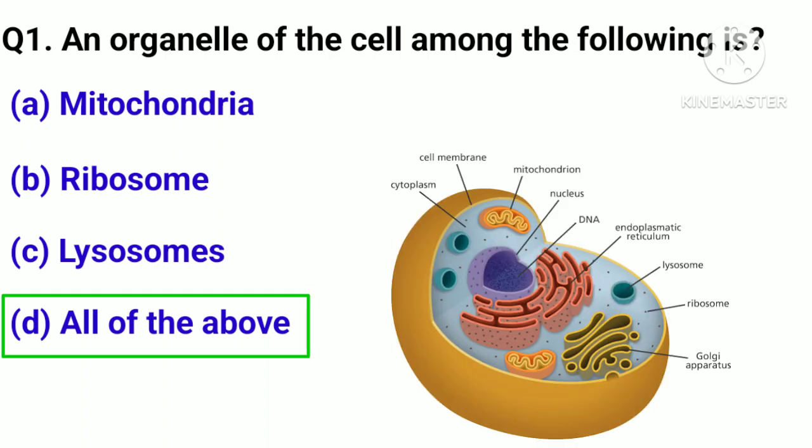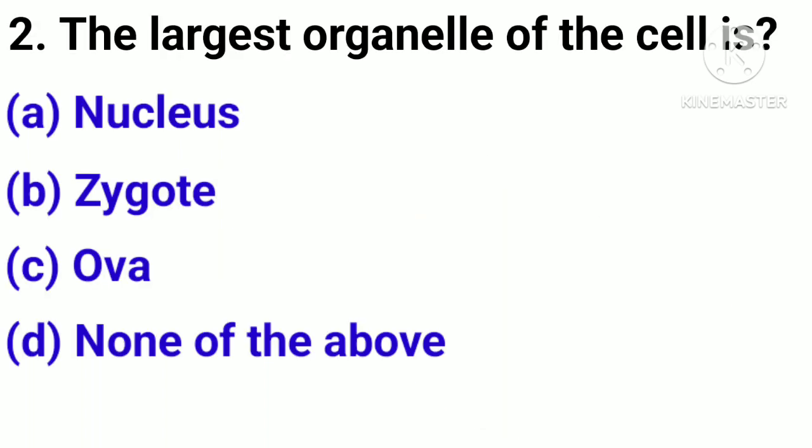Correct answer: option D, All of the above. Question number 2. The largest organelle of the cell is: option A, Nucleus; option B, Zygote; option C, [blank]; option D, None of the above.